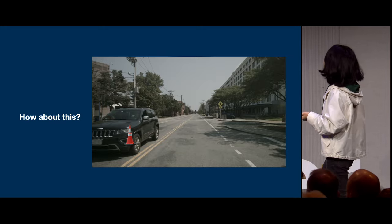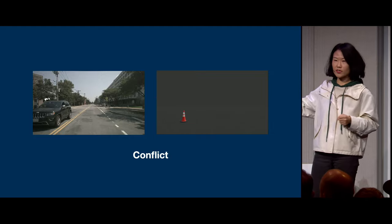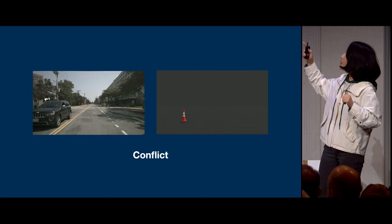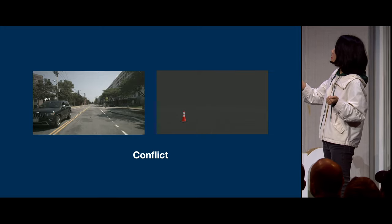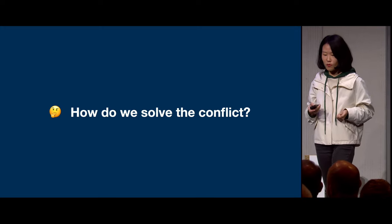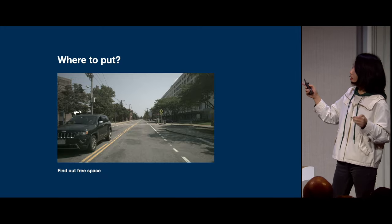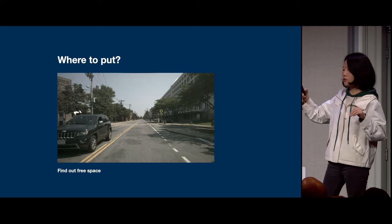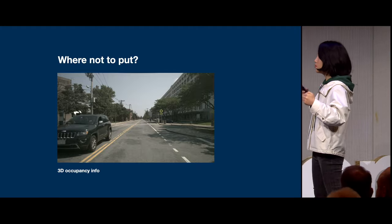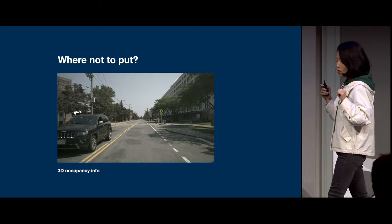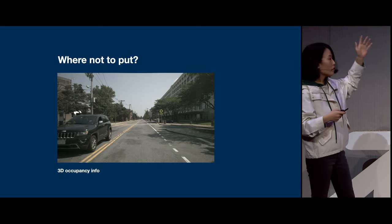But what about placement conflicts? When putting objects in the Blender scene, we could place them where we shouldn't, because that space is already occupied by real-world objects. There are two general approaches to solving this: first, we find the free space so we can place objects anywhere within it; second, we find where we should not place objects because real-world objects are already there. That means we need 3D occupancy information about the real scene.